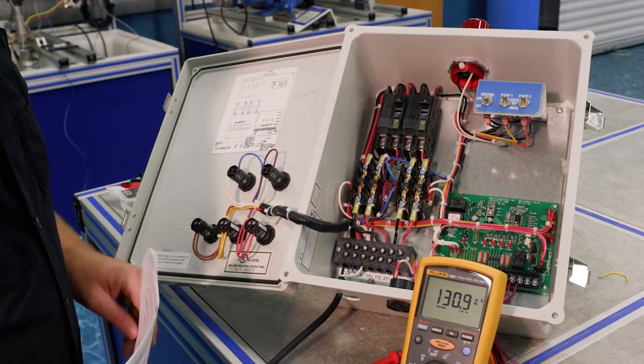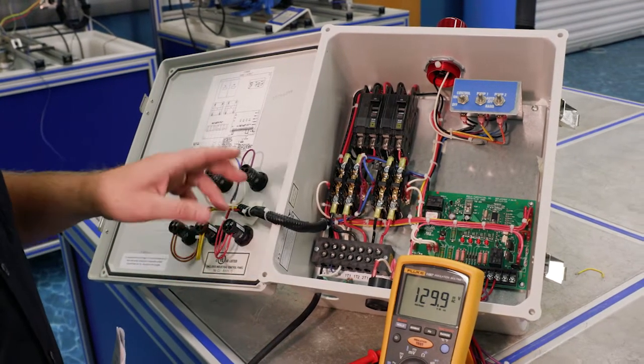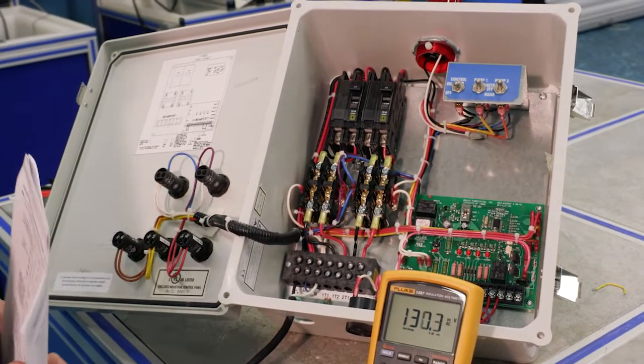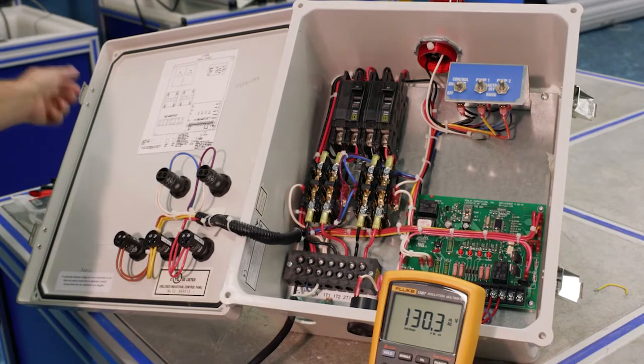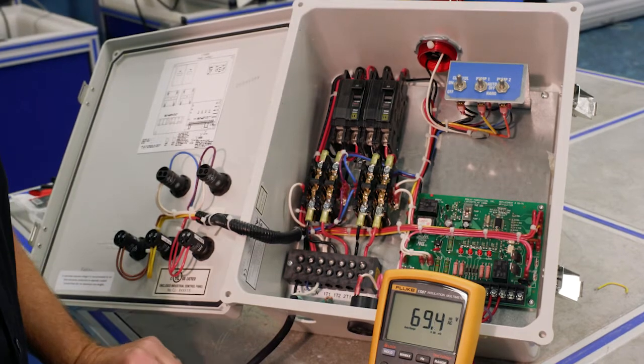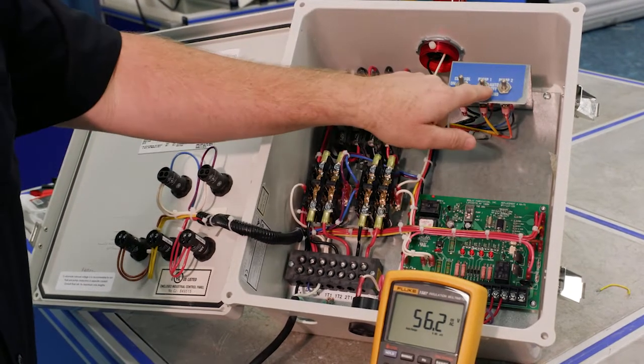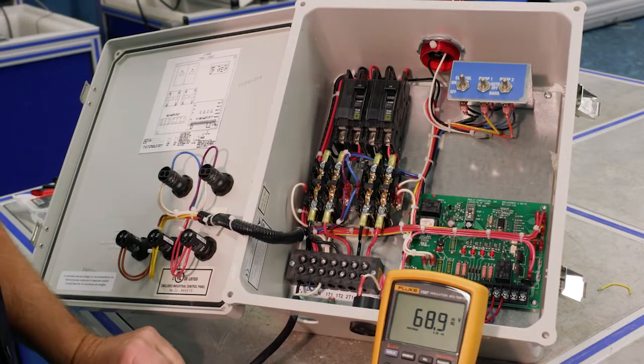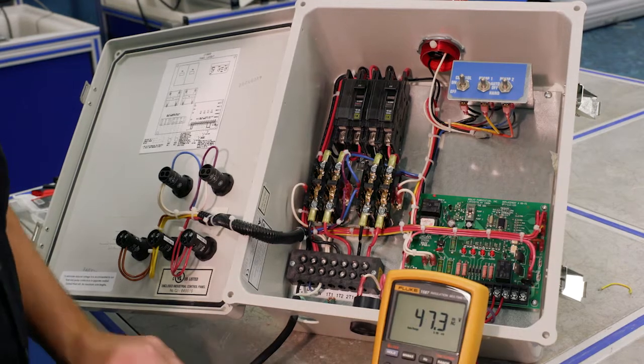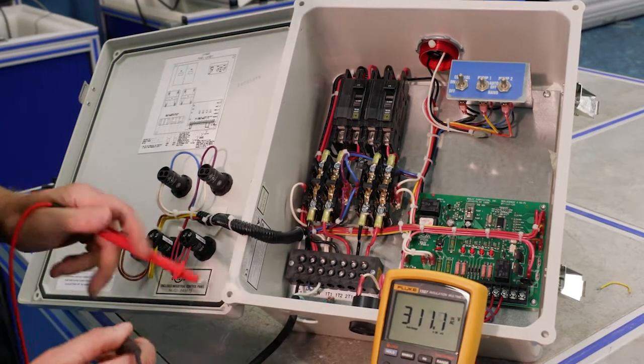Step two is following the voltage. So what we're going to do is we're actually going to power up the panel and then we're just going to follow the voltage. Before we do that, we're going to check our control, make sure our control power is on. So we always want to check that. We can leave these off for now, but we do have the control switch on.